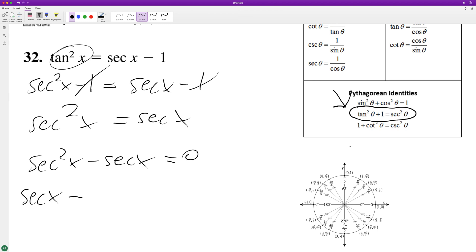Factoring this, secant x times secant x minus 1 equals 0.